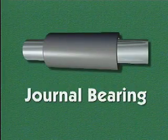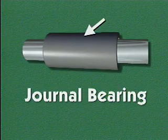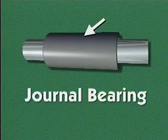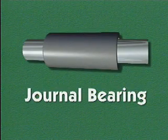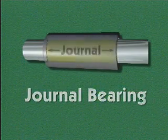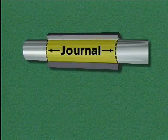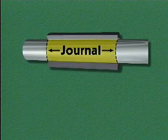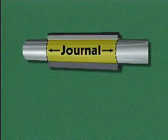Journal bearings typically consist of a metal sleeve that fits around a shaft. The sleeve is held in place within a housing. The journal is simply the place on the shaft that is surrounded and supported by the bearing.